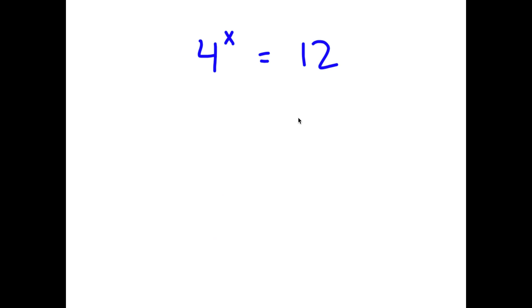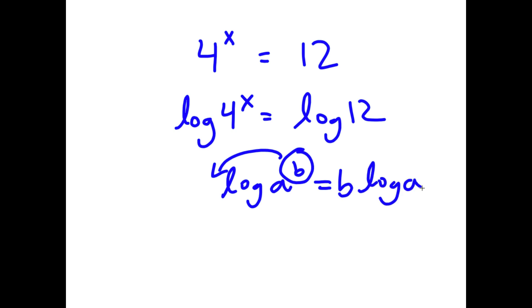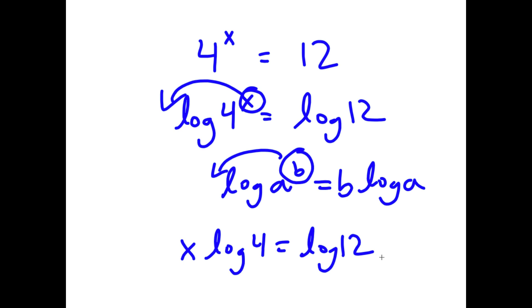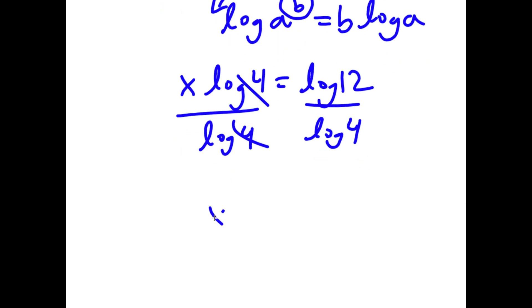So in this problem, I have 4 to the power of x is equal to 12. To solve this, I'm going to first take the log on both sides. So I have log of 4 to the power of x is equal to log 12. If I have something in the form log a to the power of b, I can move the exponent b to the front, so it equals b times log a. In this case, I can move x to the front, giving x times log 4 equals log 12. Dividing both sides by log 4, I get x equals log 12 over log 4.